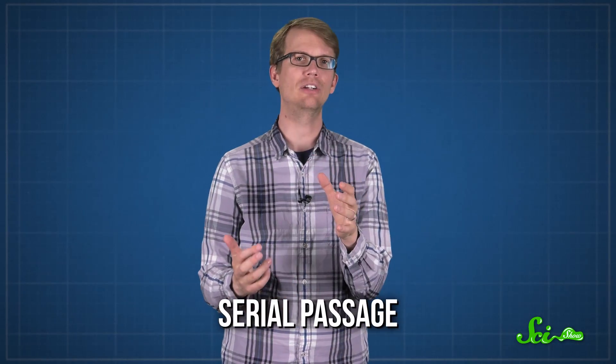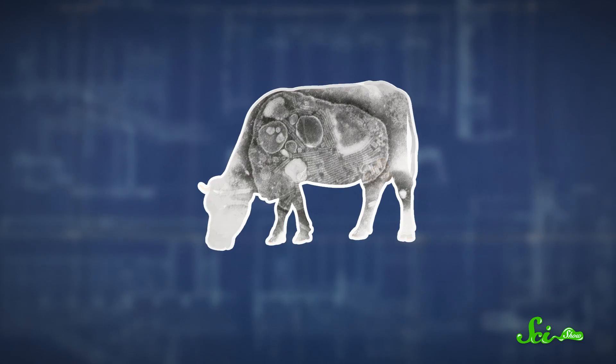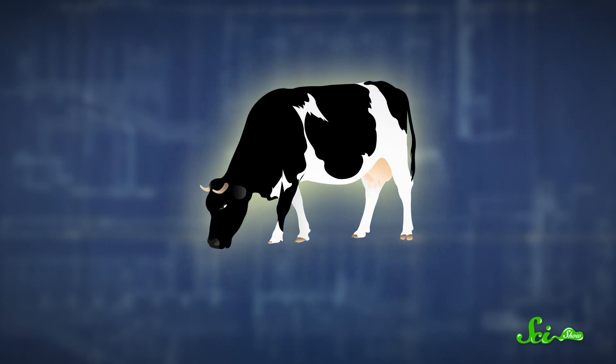An early vaccine from the 1920s used a technique called serial passage, making a weakened form of Rinderpest by growing the virus in multiple animals or cells in a lab. In this case, the scientist J.T. Edwards infected a different species so that the virus evolved to suit goats rather than cattle. If you then put this modified virus back into a cow, the cow's immune system can safely fight it, and build up anti-Rinderpest antibodies in case the normal virus comes along.